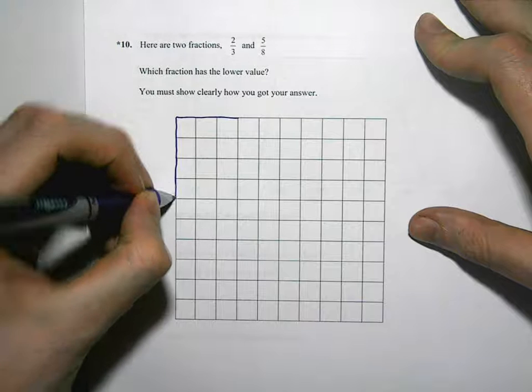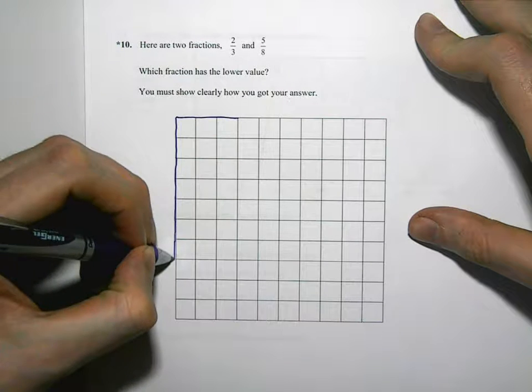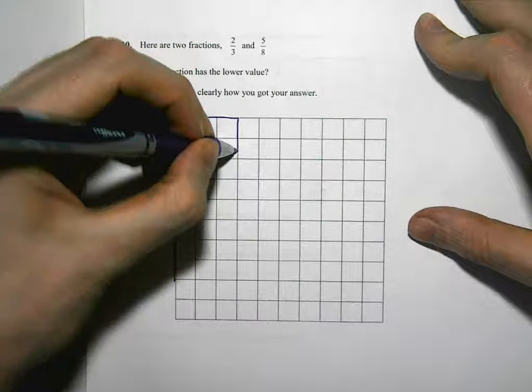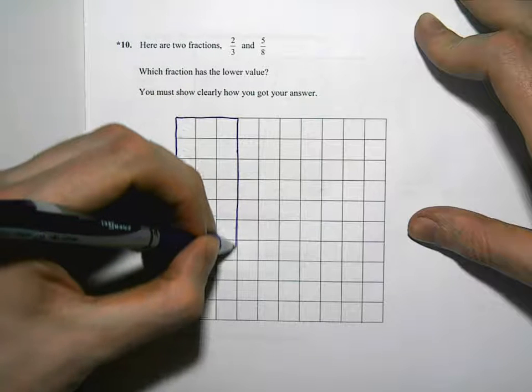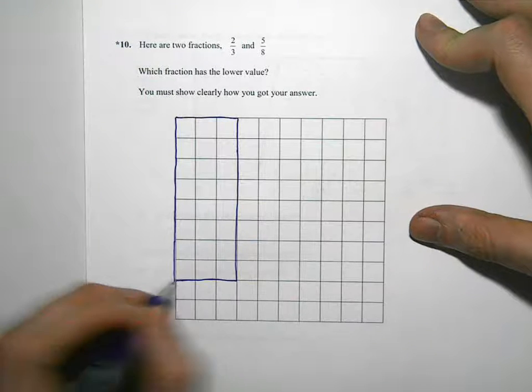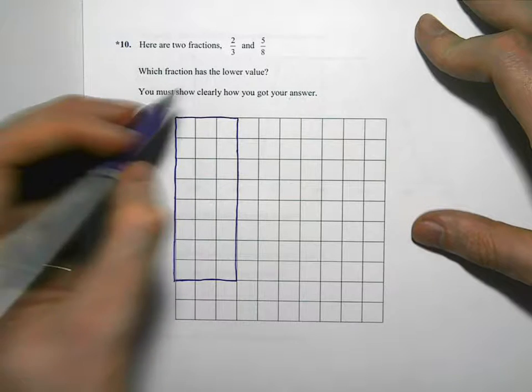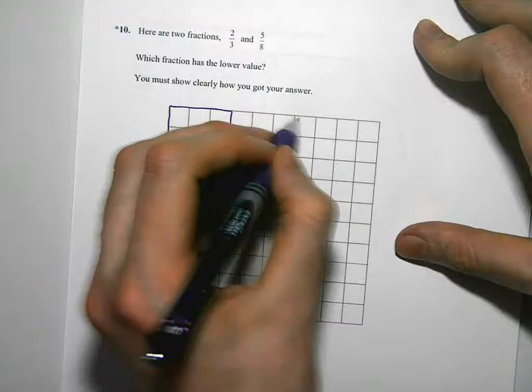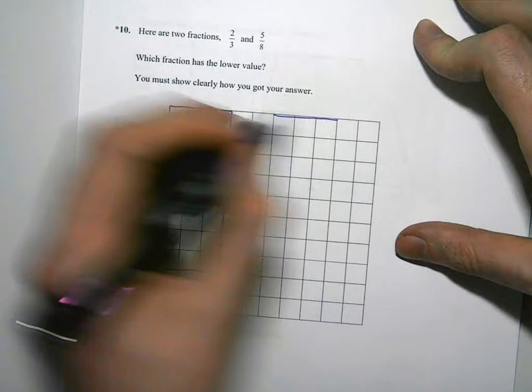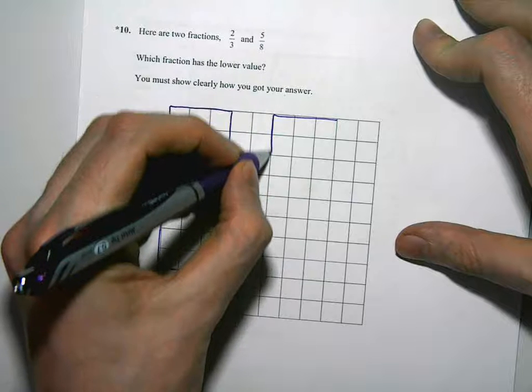2, 3, 4, 5, 6, 7, 8. I'm going to use this to compare our two things. So we're going to use this for the 2 thirds. And do another one over here. So the 5 eighths, same way, 3 by 8.